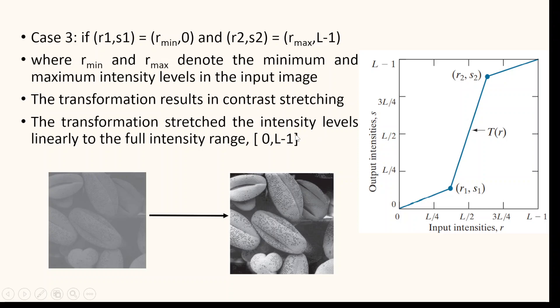The transformation stretched the intensity levels linearly to the full intensity range, that is 0 to L minus 1. Applying this particular case of R1 equal to R minimum, S1 equal to 0 and R2 equal to R maximum and S2 equal to L minus 1, you get a contrast stretched image.